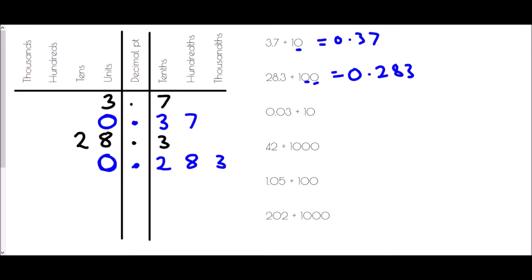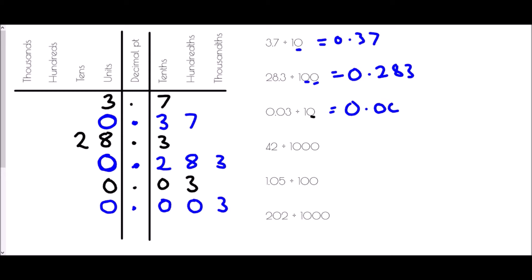For 0.03 divided by 10 — a single zero, so one place to the right — the zero in units goes to tenths, the zero in tenths goes to hundredths, and the 3 from hundredths goes to thousandths. We add the decimal point and placeholder: 0.003.